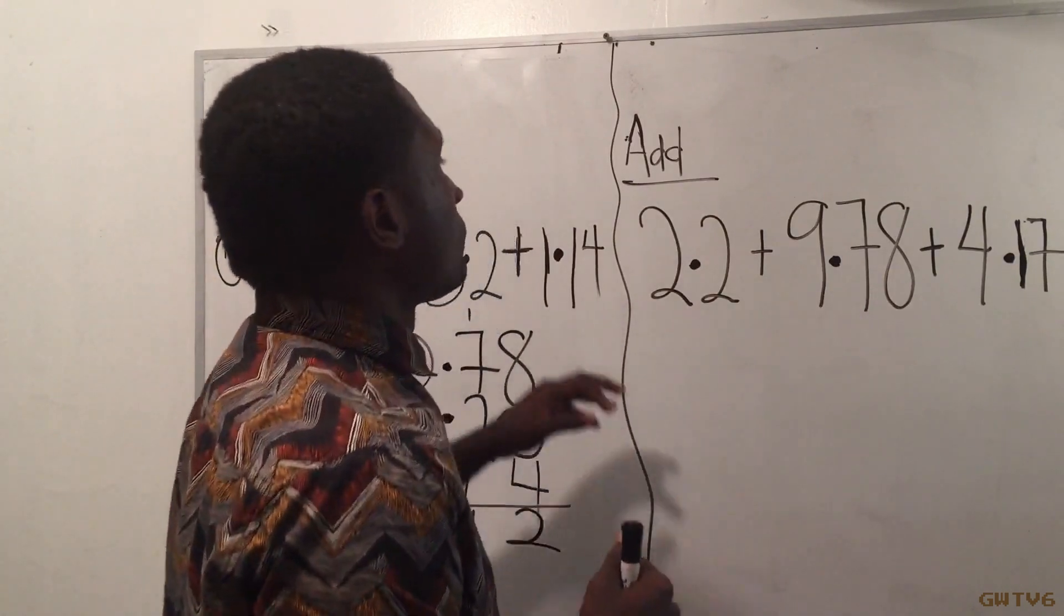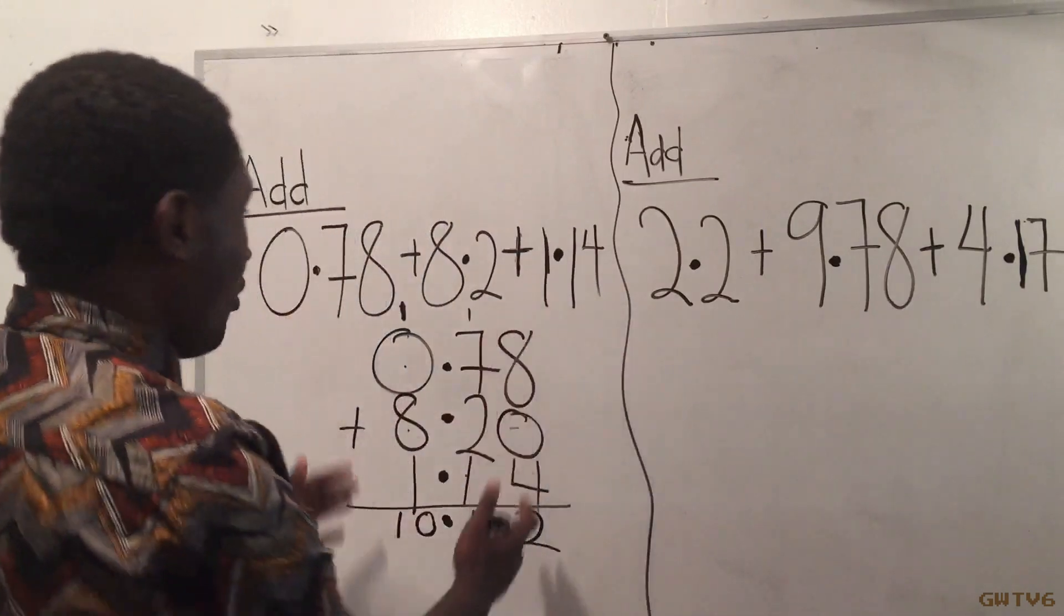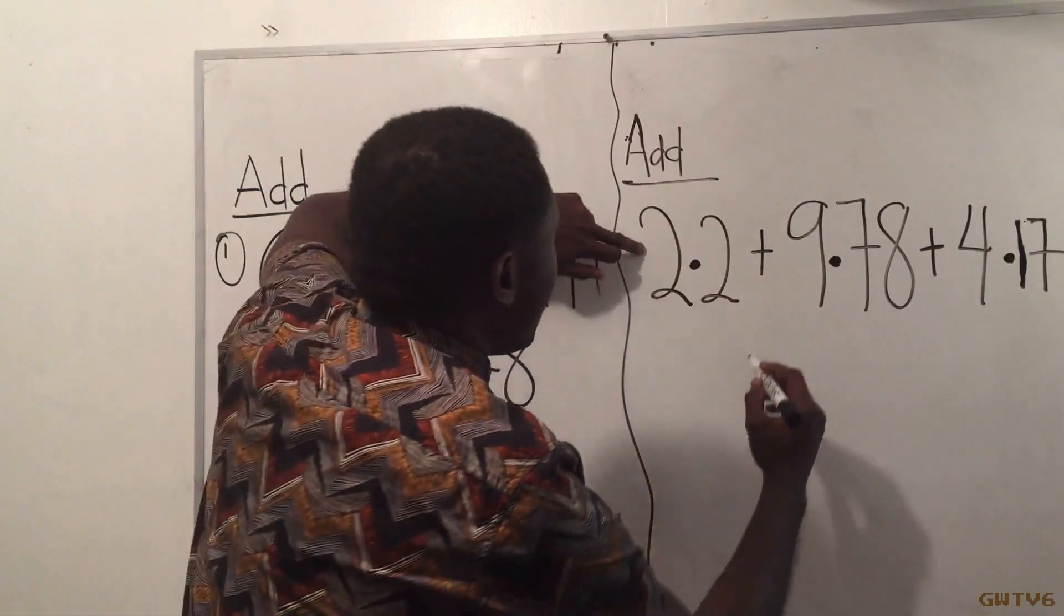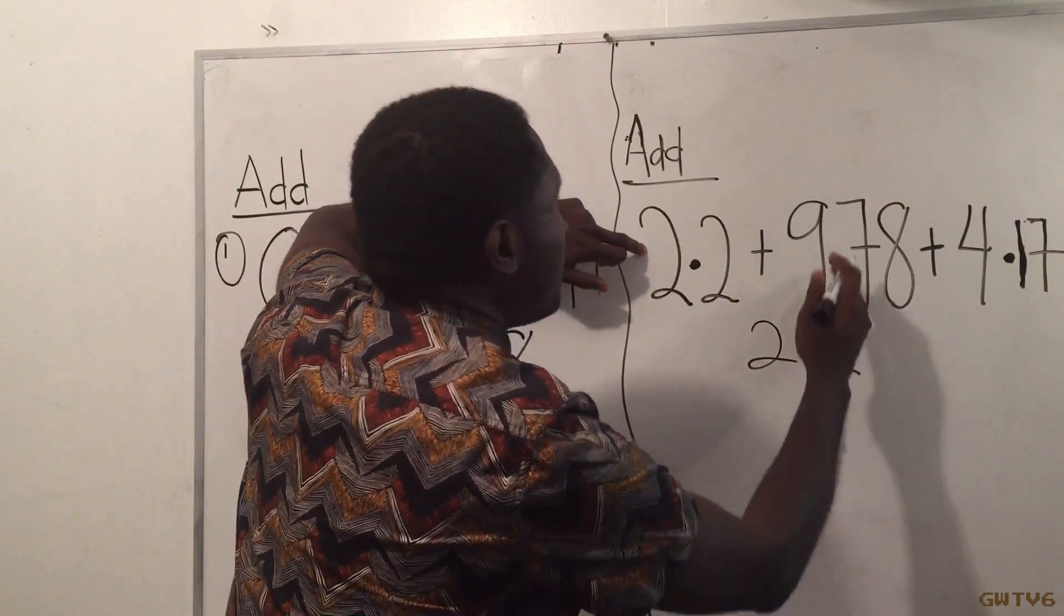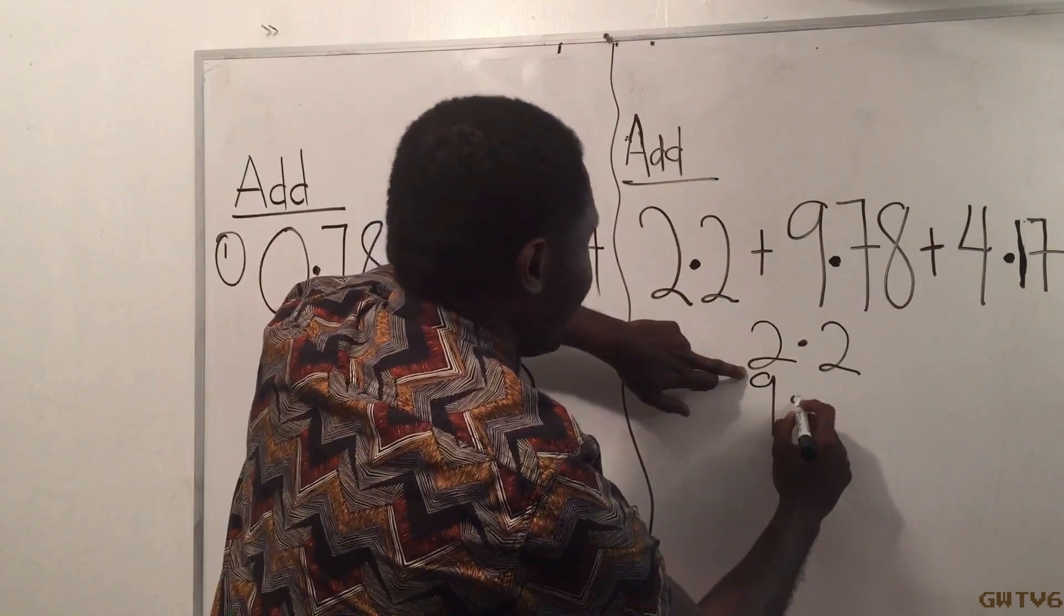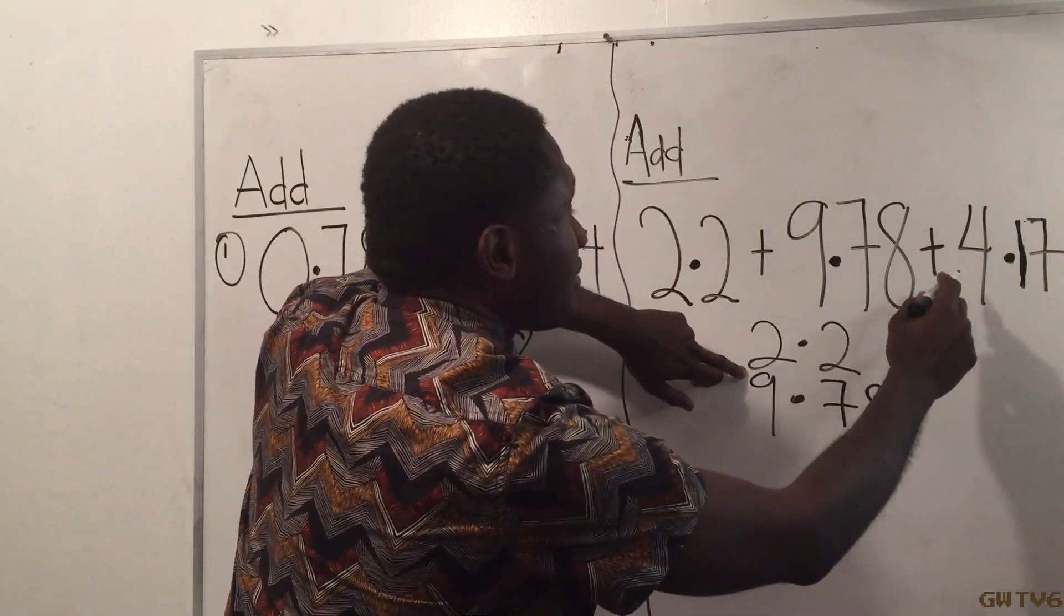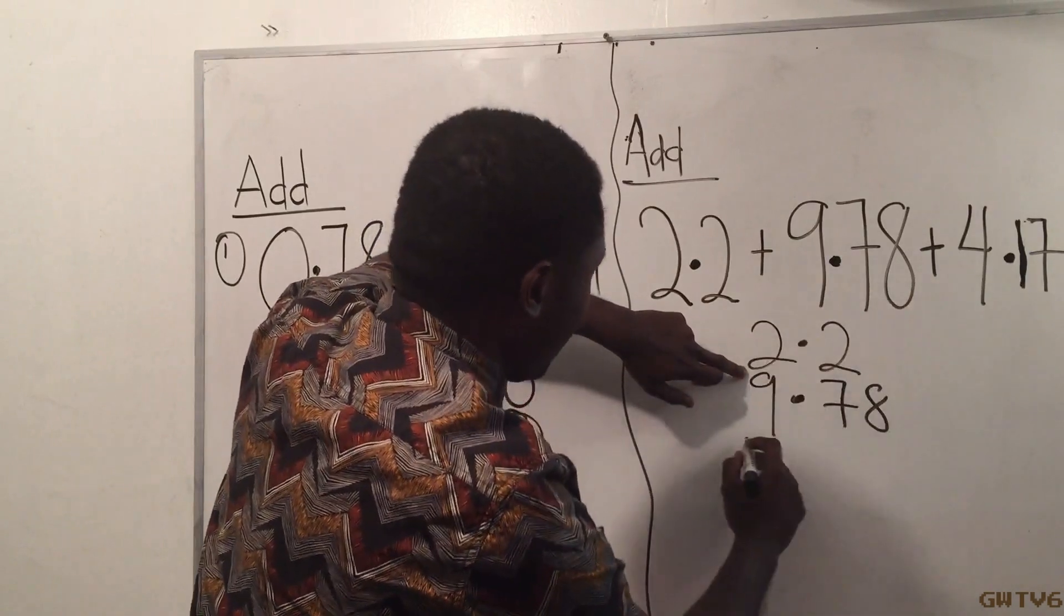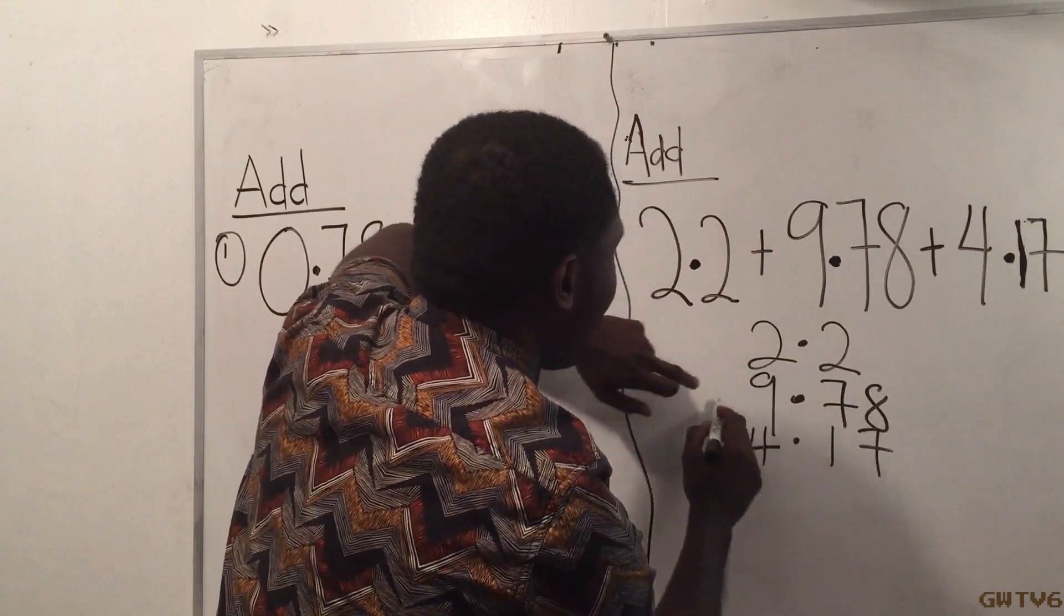Same way I'm adding decimals, so I'm gonna put it in this form again. I have 2.2. I have to make sure the decimals are in line, so I'm gonna put 9.78, and then the next one is 4.17. It has to be in line, so I'm gonna put 4.17.